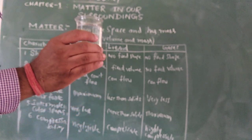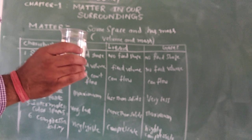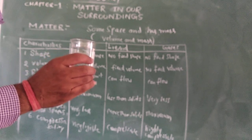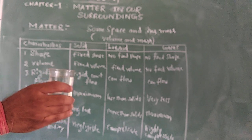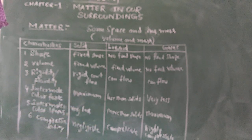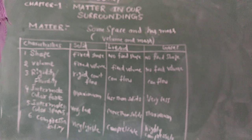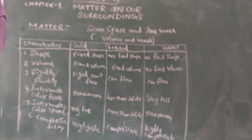Diffusion means the property of a substance mixing on its own. For diffusion, one activity you might have done in class: if you bring one jasmine flower and keep it in one corner of the classroom, the entire class can observe the smell of the jasmine — that is because of diffusion. The smell of the jasmine mixed with the gas molecules in our surroundings, and diffusion takes place, which is why we can smell the jasmine.